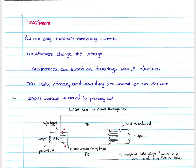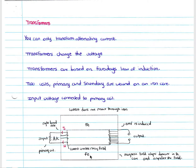Looking at a transformer's components, we have two coils. Your first coil, or primary coil, is here, and your secondary coil is over here. You have your inputs at the primary coil and your outputs at the secondary coil. The block labeled Fe for iron is known as your iron core — that is the core of your transformer.